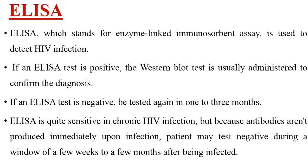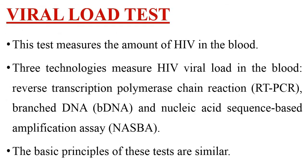If ELISA is positive, Western blot is done to confirm the diagnosis of HIV, though it is considered a weak test and is not used much now. Apart from that, viral load tests are also carried out to identify the amount of HIV virus in the blood. Various technologies are used, including RT-PCR, branched DNA, and nucleic acid sequence-based amplification assay (NASBA). The basic principles remain the same for all these tests, and they help find out the amount of HIV infection in the blood.